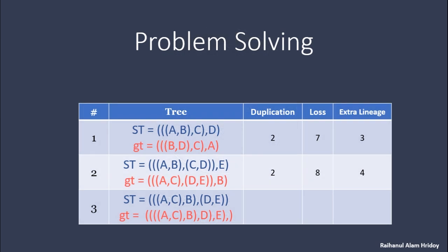In our last video we explored how to count the number of gene duplications, number of extra lineages, and number of losses — we solved problem number one in our previous video. Now we will look into problem number two, and at the end of this video I will show you a formula by which you can find the third variable if any two are given. Let's solve problem number two.